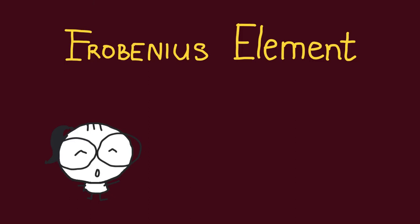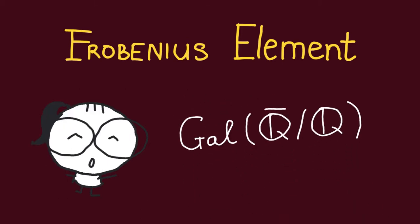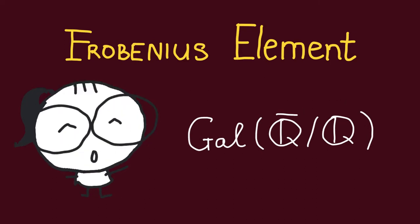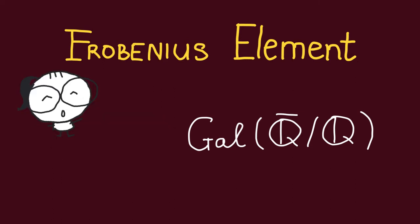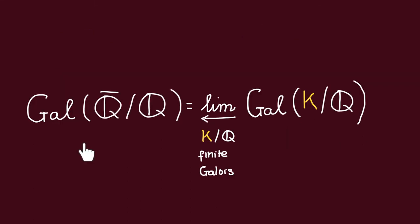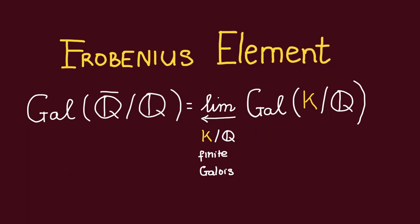In this video, we're going to talk about the Frobenius element. One of the most important objects of study of arithmetic is the absolute Galois group of Q. This group is very complicated, but we actually know how most of its elements look like — most of its elements are going to be Frobenius elements. Since the absolute Galois group of Q is just the inverse limit of the Galois group of finite Galois extensions over Q, it suffices to define these Frobenius elements in these finite Galois groups in a compatible way.